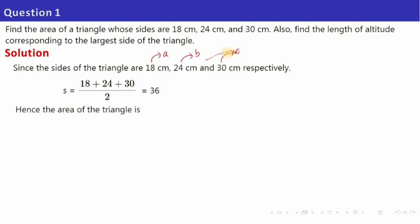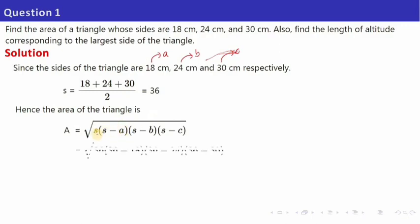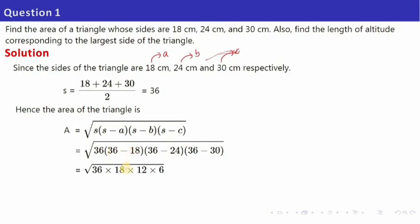The area of the triangle using Heron's formula: put the value of S as 36, put the value of A, B and C, and do the simplification. 36 minus 18 is 18, 36 minus 24 is 12, 36 minus 30 is 6. When you calculate and find the square root, you get the answer as 216 centimetre squared. This is your area for the triangle with sides 18, 24 and 30.